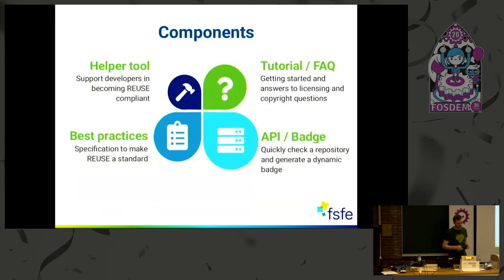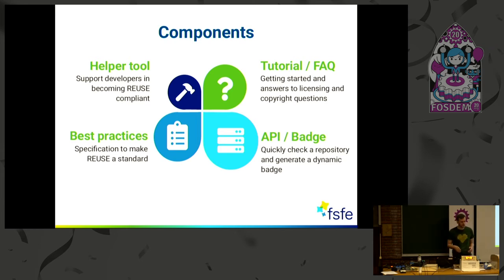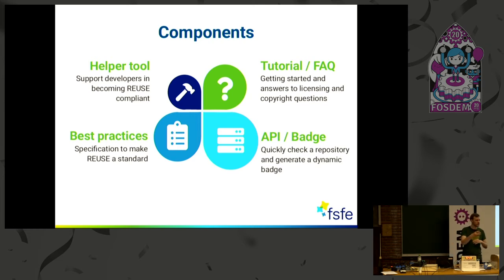This sounds quite theoretical, so we made it practical. We have the Reuse helper tool, which enables you to become Reuse-compliant. It doesn't only check whether you're compliant, but also helps you initialize your repository, download license texts so you don't have to find them from different internet sources, and helps you add licensing and copyright information to the headers of your files. The tool is easy to install, available online, and is free software, of course.